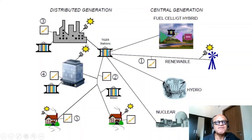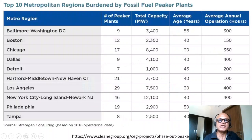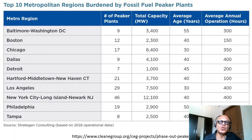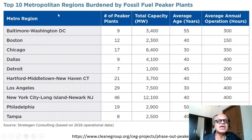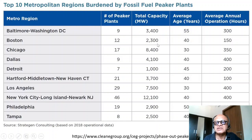Each node has a local battery supply for managing emergencies and perturbations. There are plants called peaker plants, used in the old system to rapidly increase energy supply during sudden demand spikes. These are typically very dirty fossil fuel plants because they need to be immediately turned on and start delivering power to the grid. Here is an example from the US: 10 metropolitan regions burdened by fossil fuel peaker plants, showing number of plants, total capacities, and average age — meaning very old systems from when fossil fuel emissions were less of a concern.